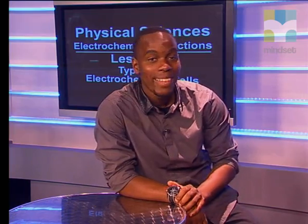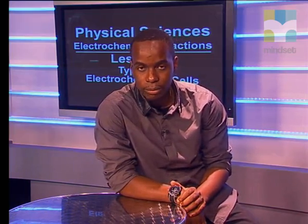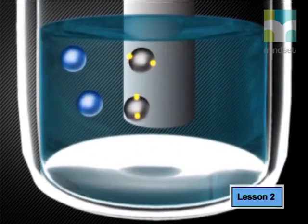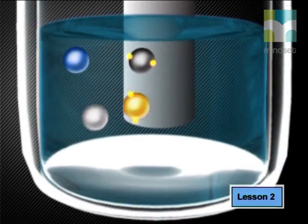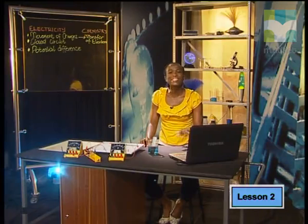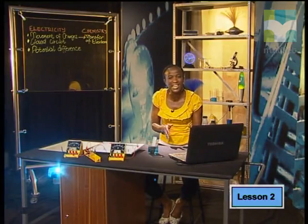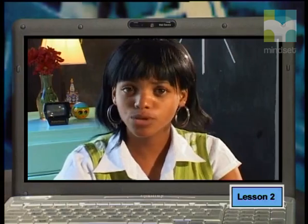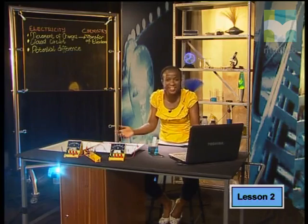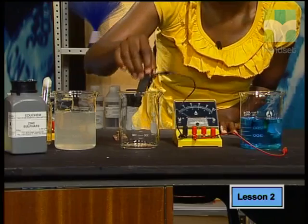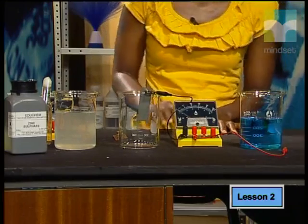In the redox reaction, we observed that electrons were transferred over a very short distance between the copper ions and the zinc metal. But chemists decided to see what would happen if they increased the distance between the zinc metal and the copper ions. Well, let's try. Let's begin this experiment.